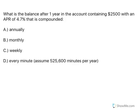What is the balance after one year in the account containing $2,500 with an APR of 4.7% that is compounded annually, monthly, weekly, and every minute?